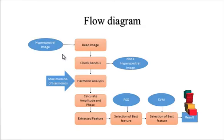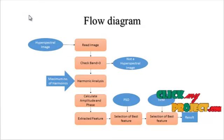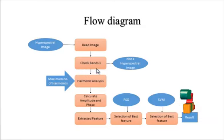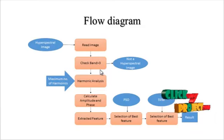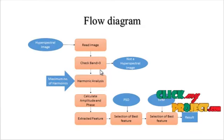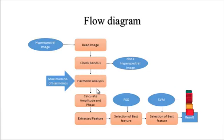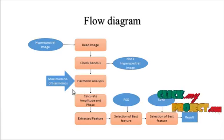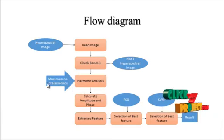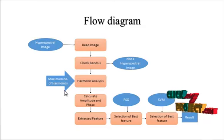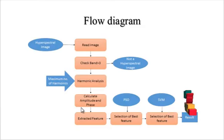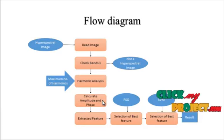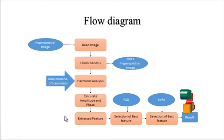After the band image input, band checking is carried out. If the image is not a hyperspectral image, the process is terminated. Otherwise, harmonic analysis is performed to analyze the maximum number of harmonics present in the bands. The amplitude and phase are then calculated for each band for the band selections.